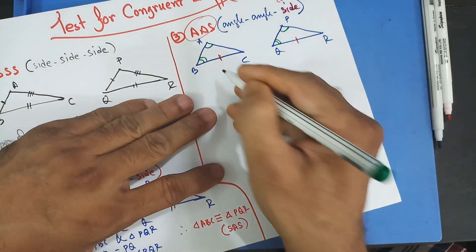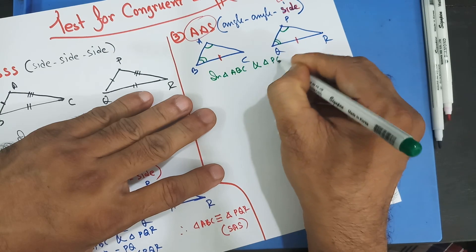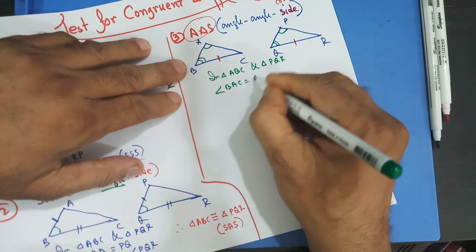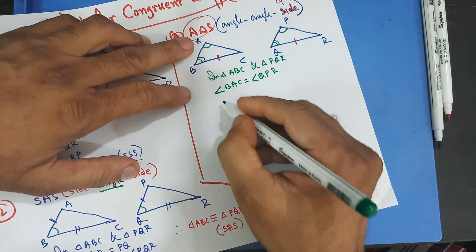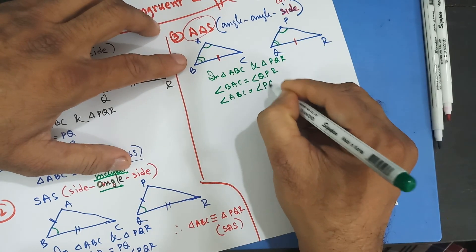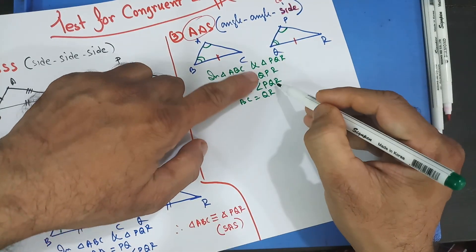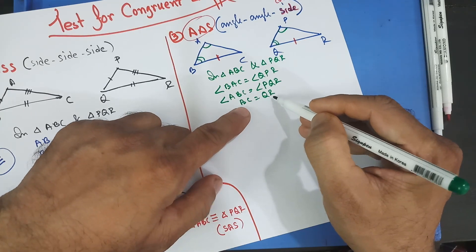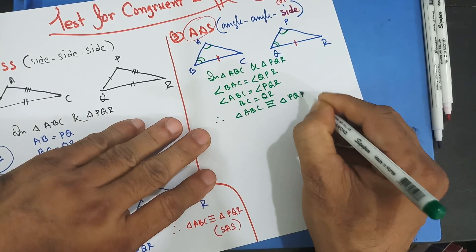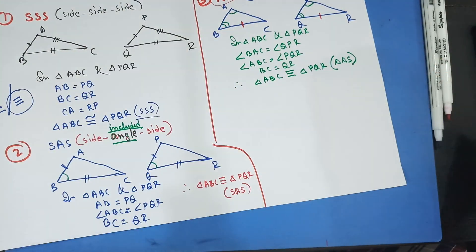In triangle ABC and triangle PQR: angle BAC equals angle QPR, angle ABC equals angle PQR, and BC equals QR. Two angles and one corresponding side are given. Therefore, triangle ABC is congruent to triangle PQR. The test of congruency is angle, angle, corresponding side — AAS.